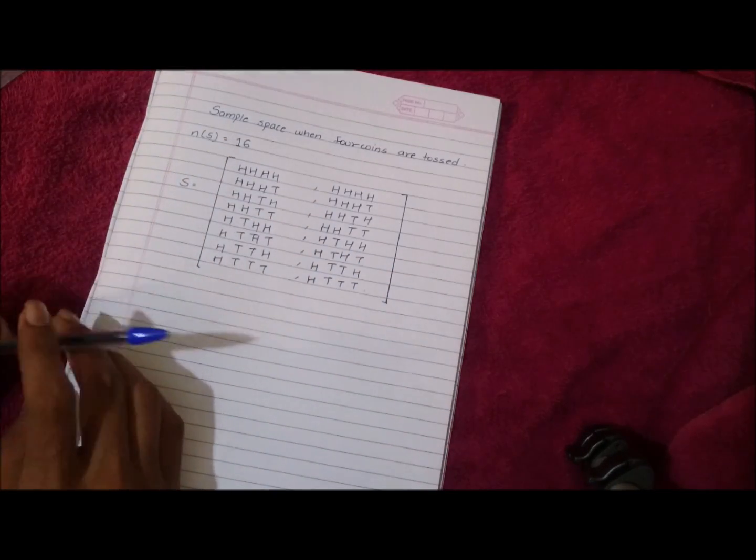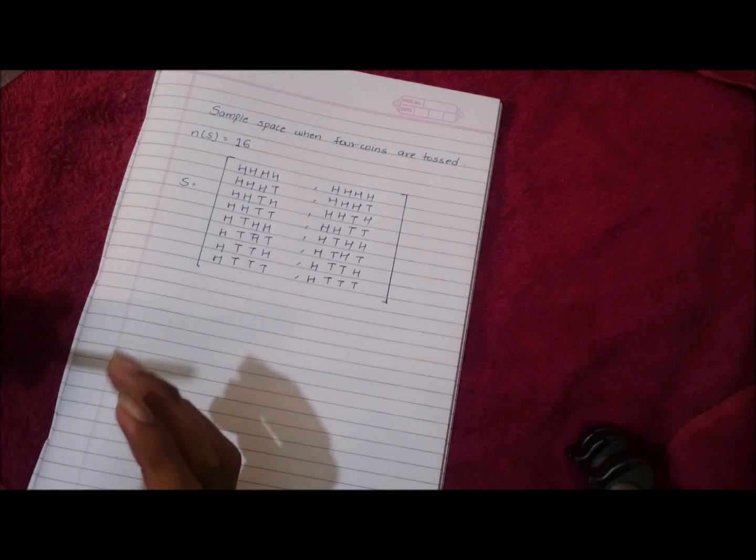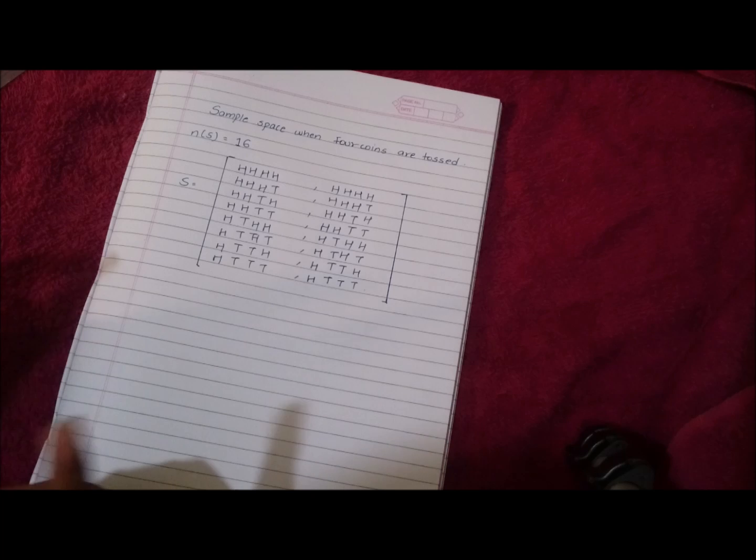Hence this is the way we write the sample space when four coins are tossed in minimum amount of time. Thank you for watching. Please do subscribe.